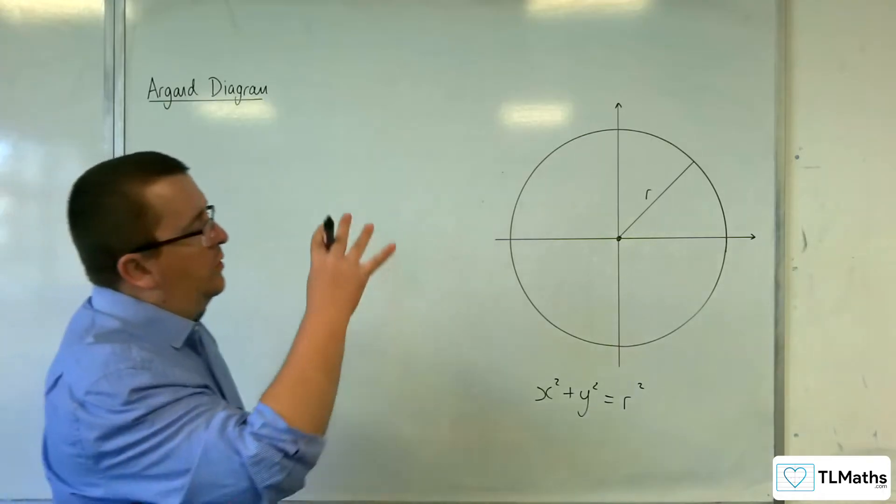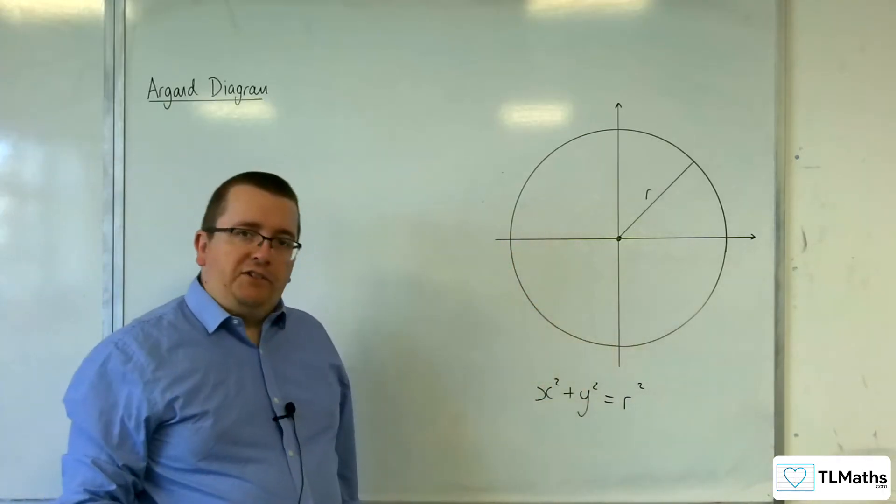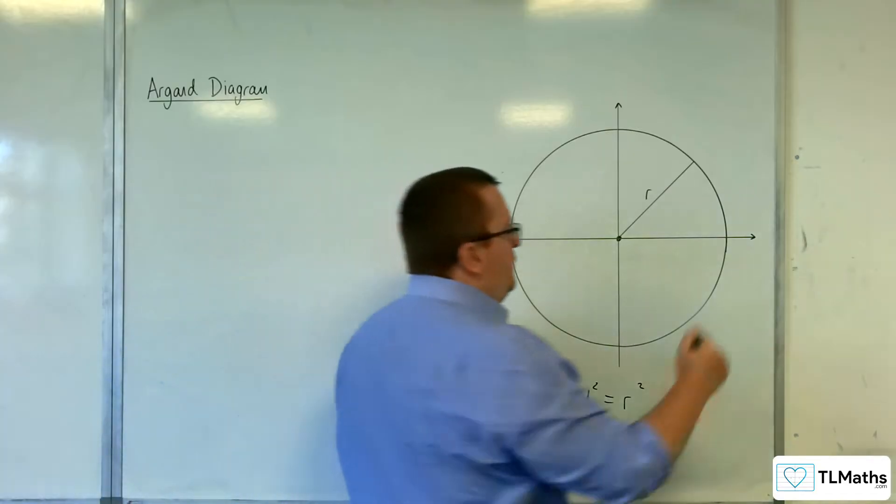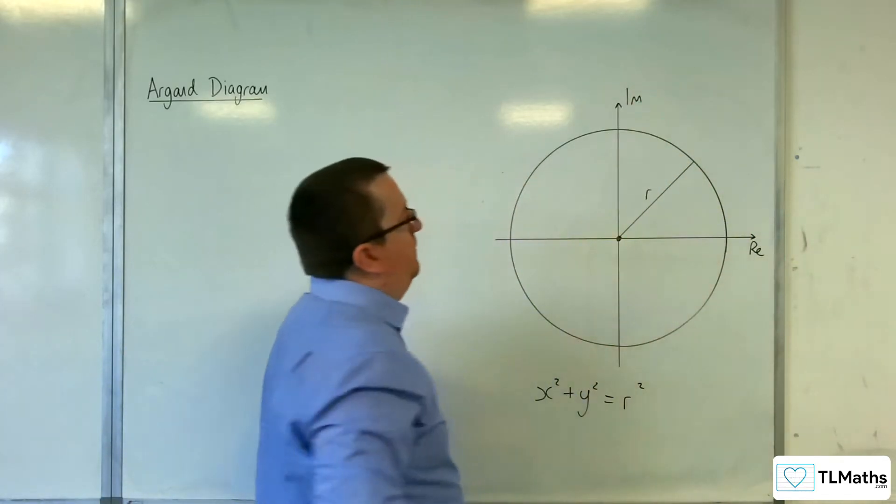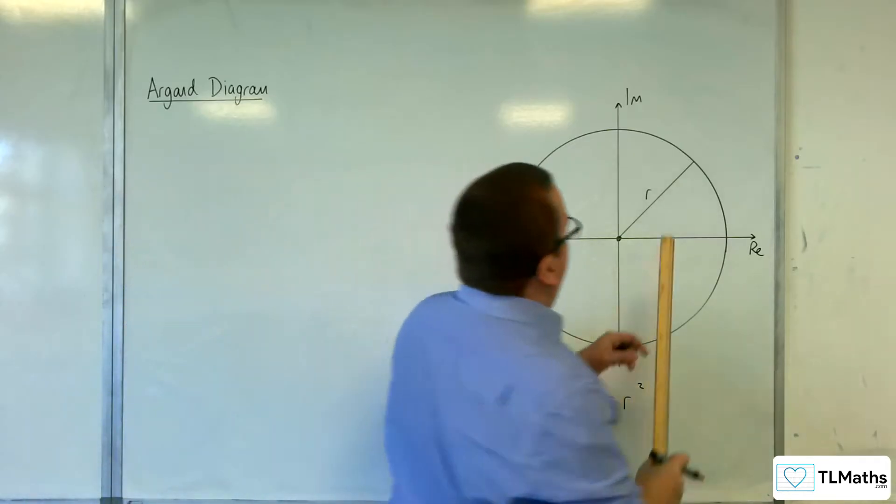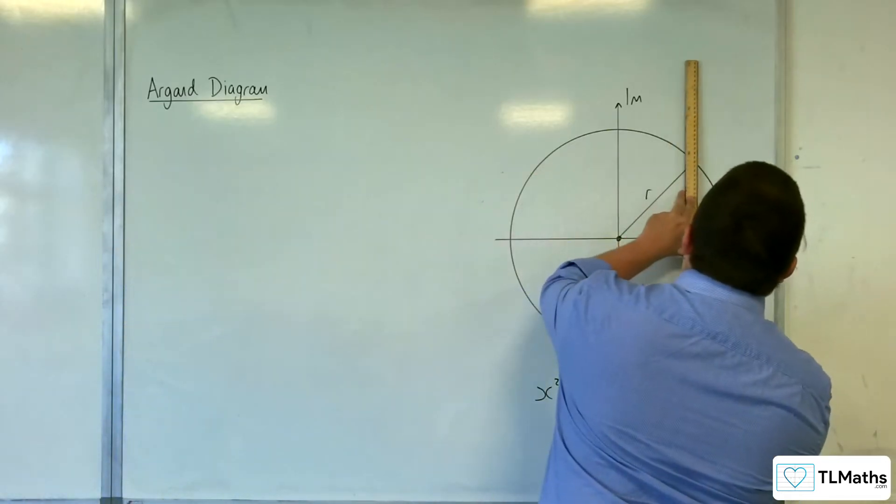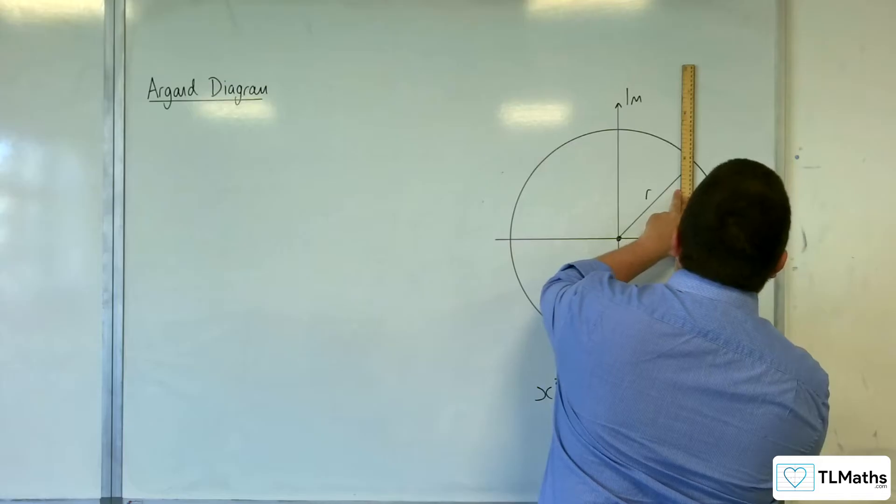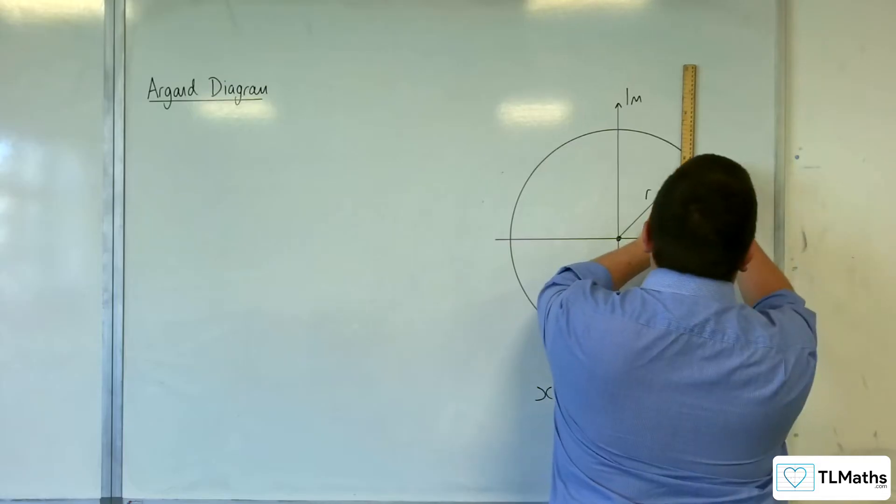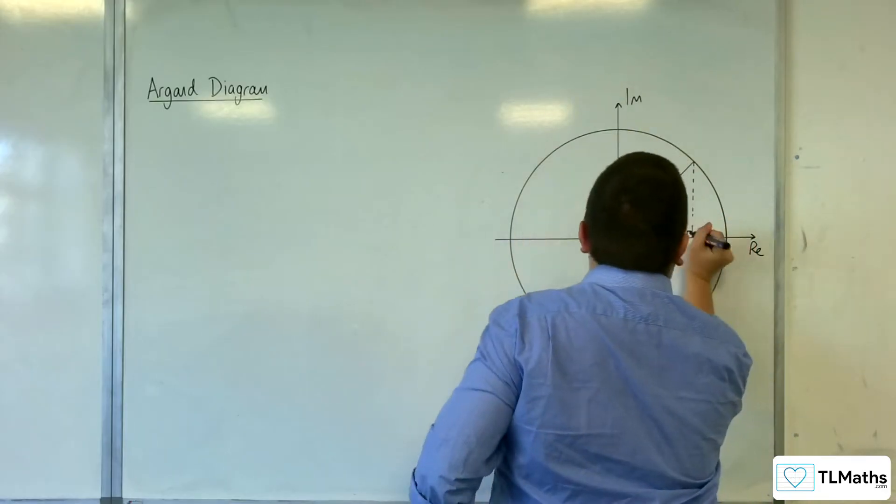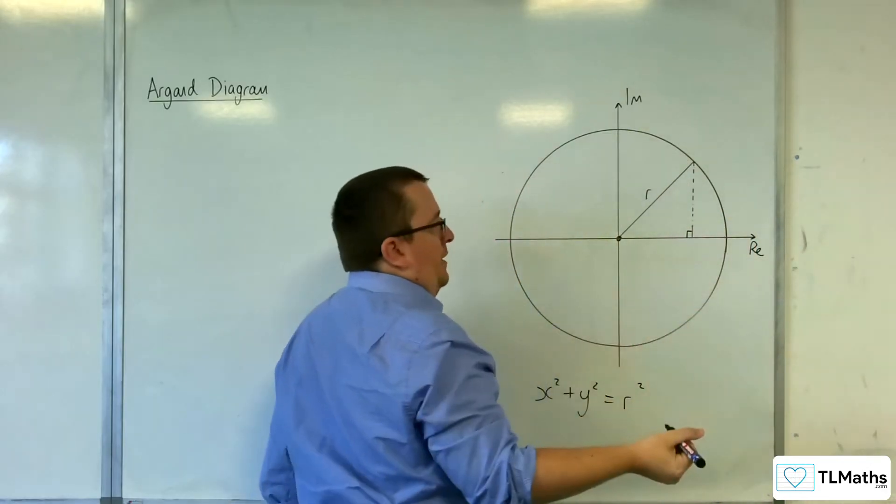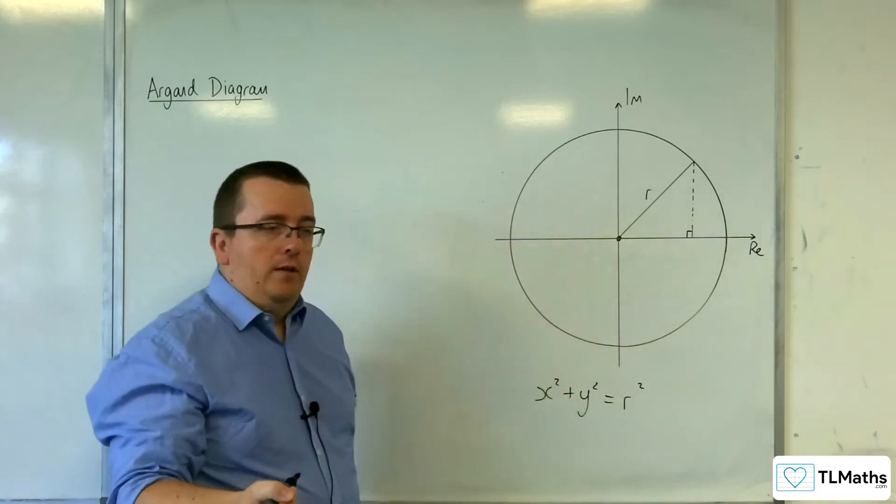Now, how can we relate that back to the Argand diagram? So, what if this was the real axis and this was the imaginary axis? Then, each point that is on the outside of that circle, on its circumference, if we drop a perpendicular down there, we'll have coordinate of x and y.